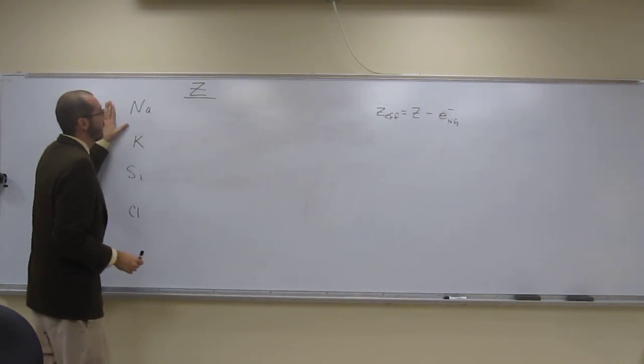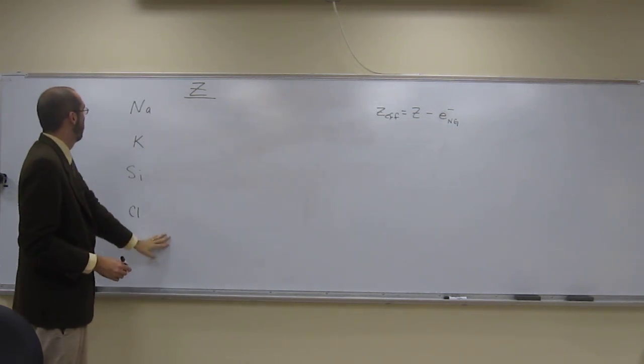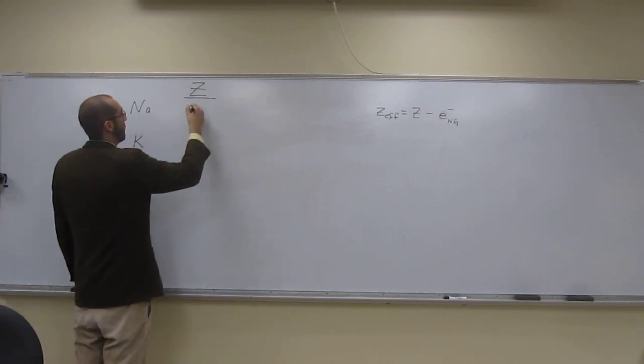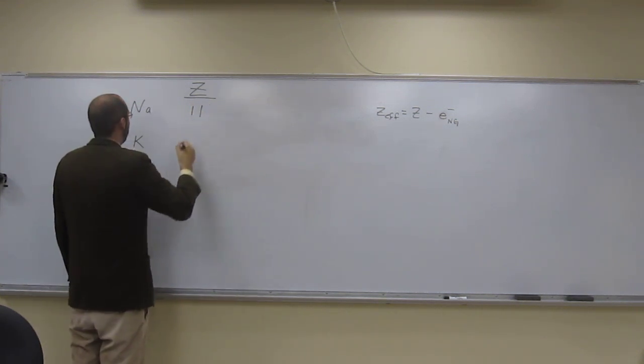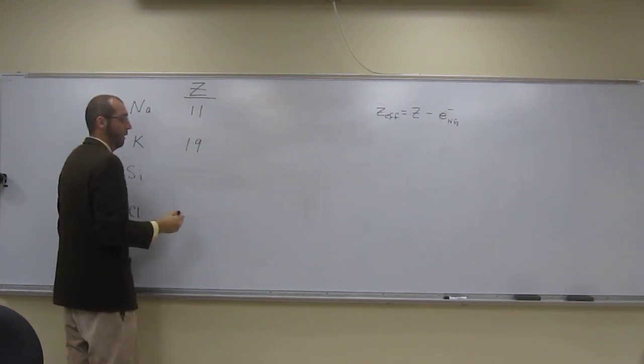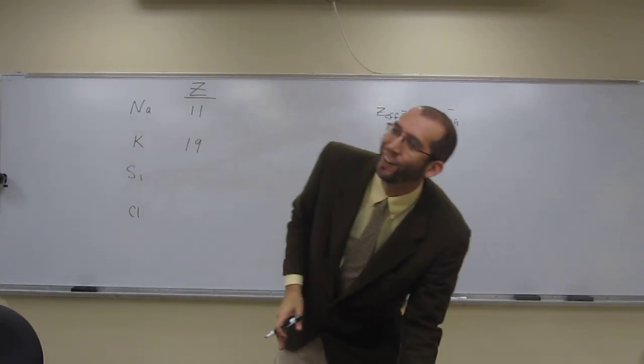So let's go ahead and look for the nuclear charge of all four of these atoms. So look up at the periodic table. Sodium is what? Eleven. Potassium? Nineteen. You got it right, right?